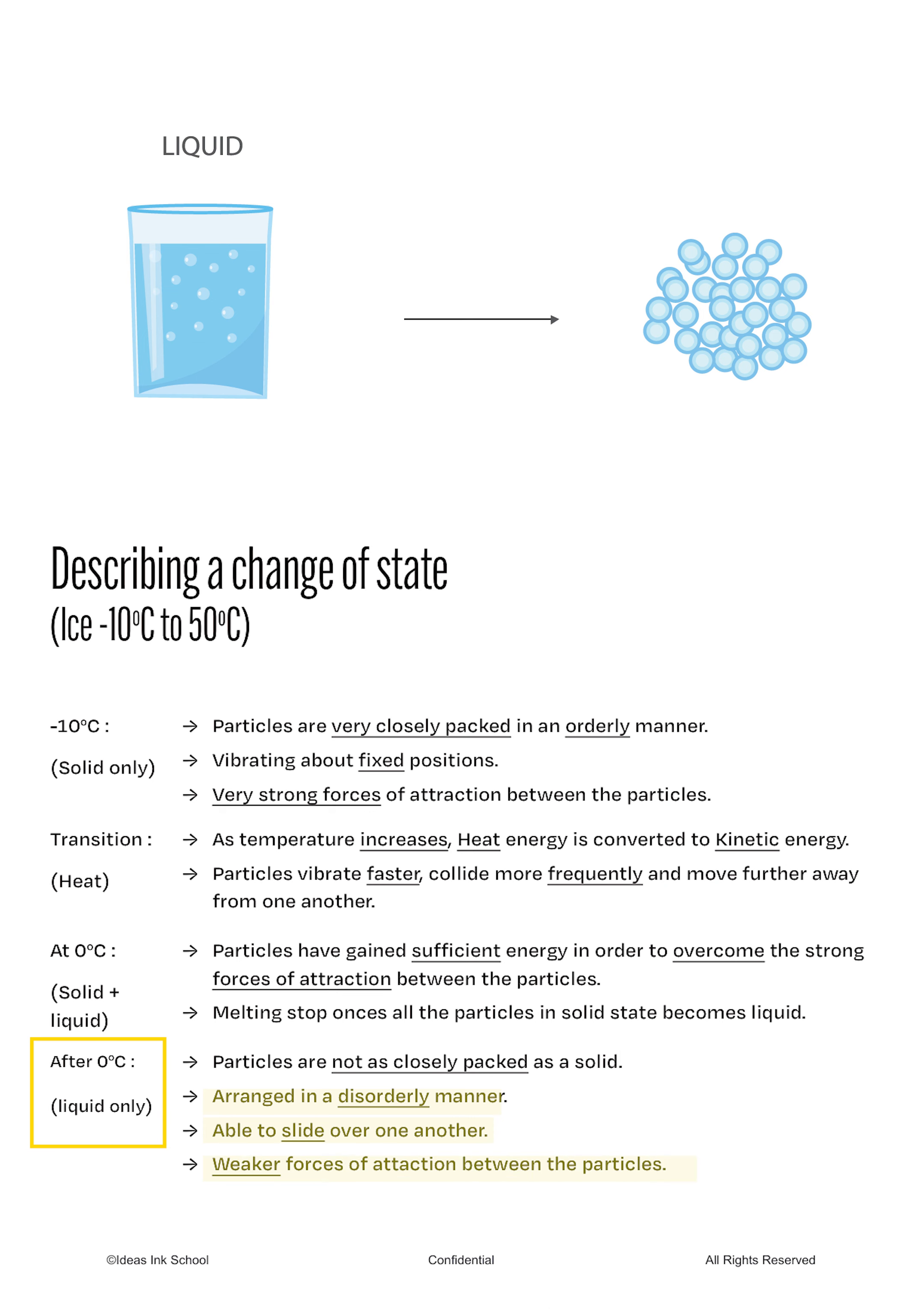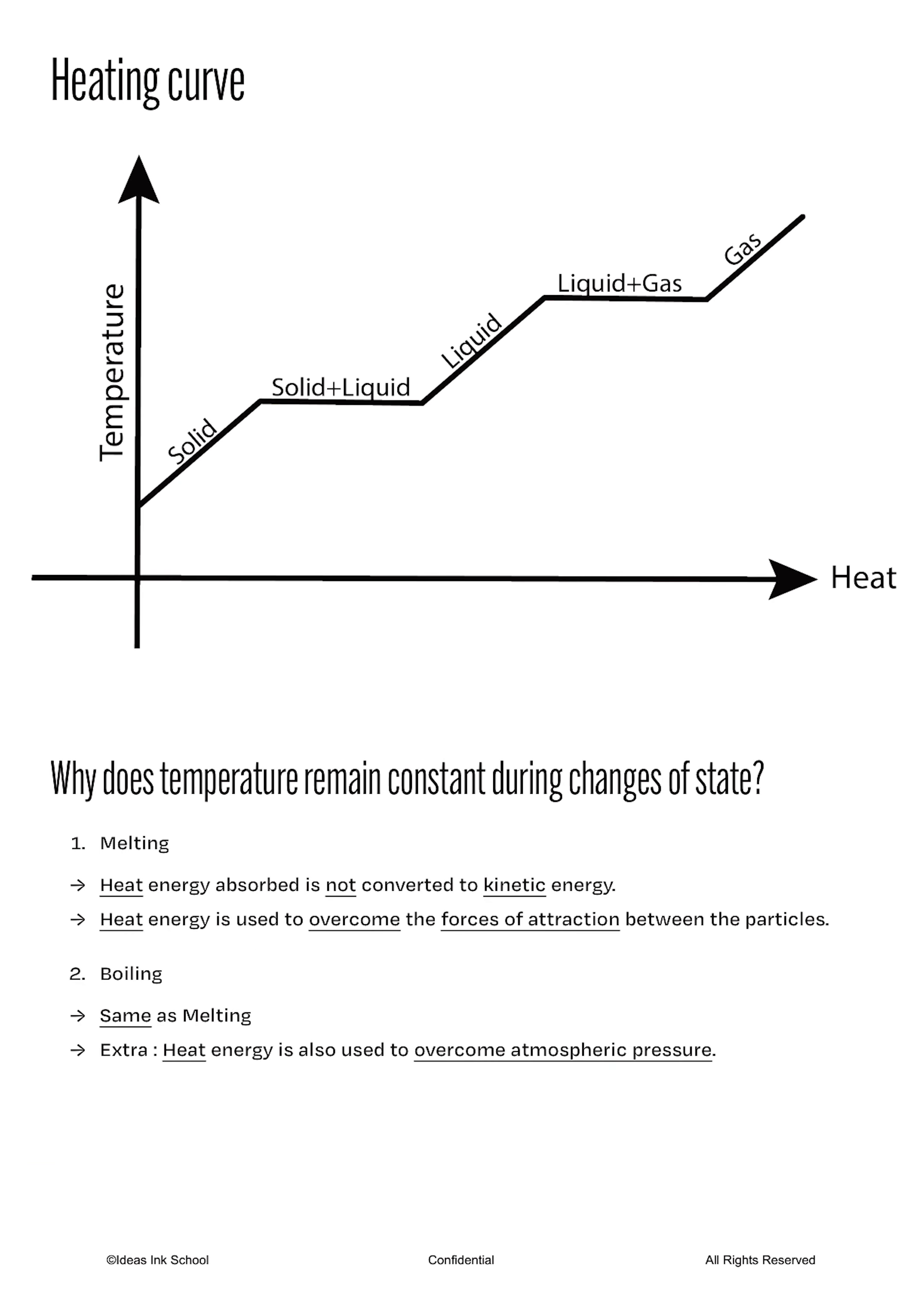This entire process can be summarized in the heating curve found on the next page. Please pause the audio to study the heating curve carefully. Note on the horizontal section of the graph that there will always be two states present during changes of state. For instance, both solid and liquid states can be found during melting, and both liquid and gaseous states can be found during boiling. But look closely at the temperature during these changes of state. Why does the temperature remain constant during that period of time?